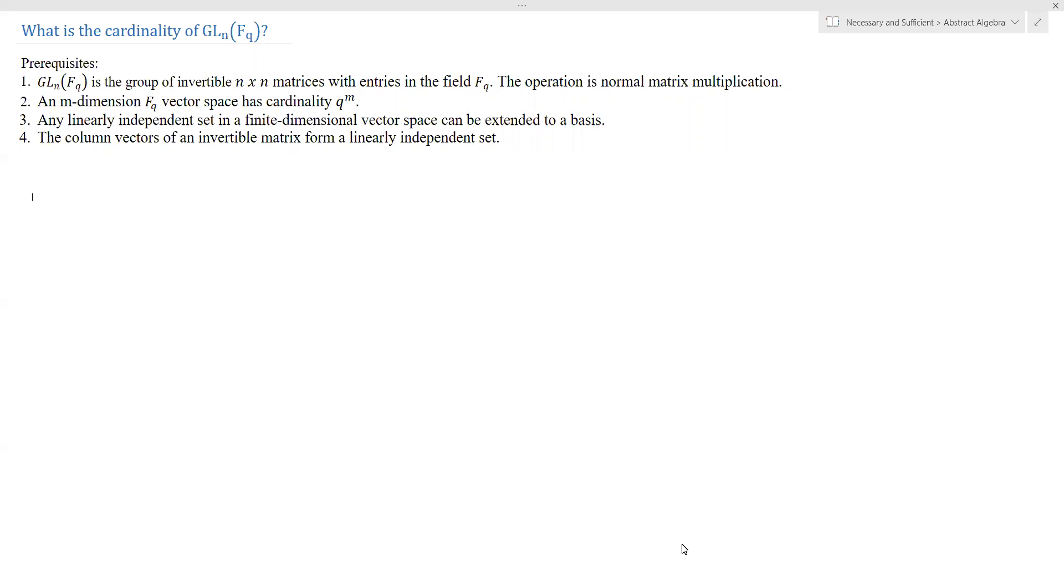Second, we should recall that an M dimensional FQ vector space has cardinality Q to the M. Third, any linearly independent set in a finite dimensional vector space can be extended to a basis. And lastly, the column vectors of an invertible matrix form a linearly independent set.